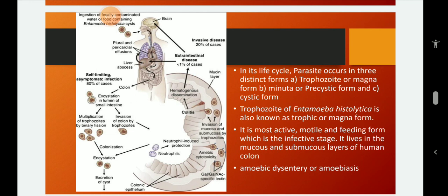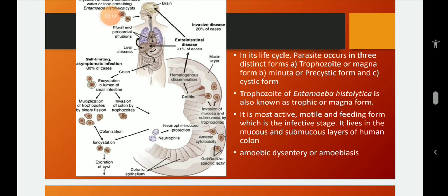And in its life cycle, we see three distinct forms. Number one trophozoite form, or it is also called as magna form. And number two is a minuta or precystic form and third one is the cystic form. And this is the details regarding the Entamoeba histolytica.